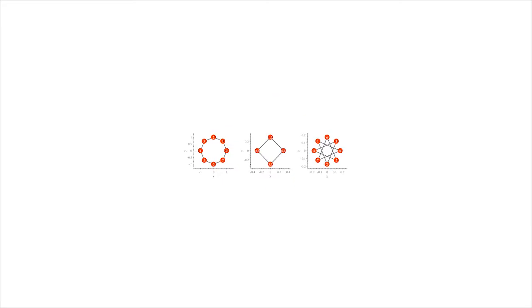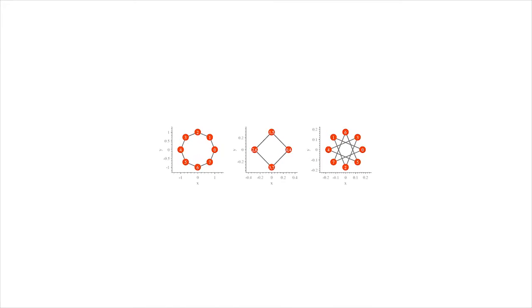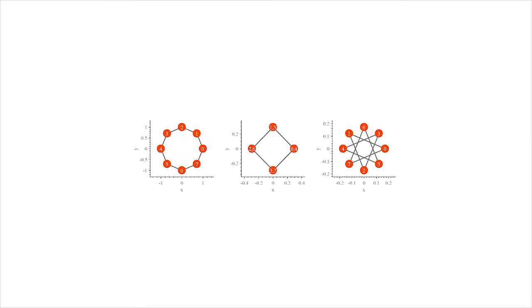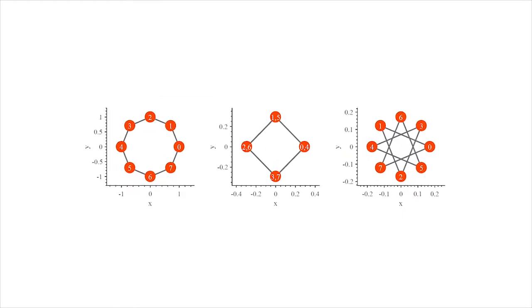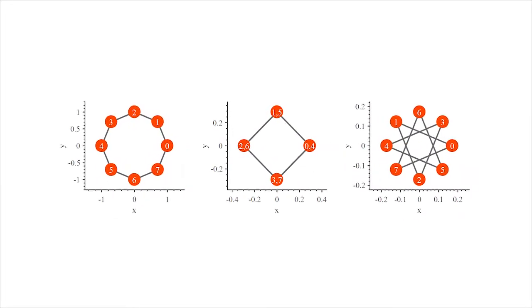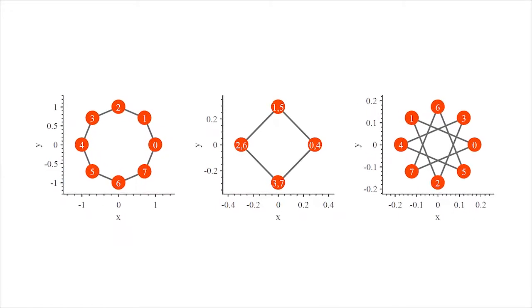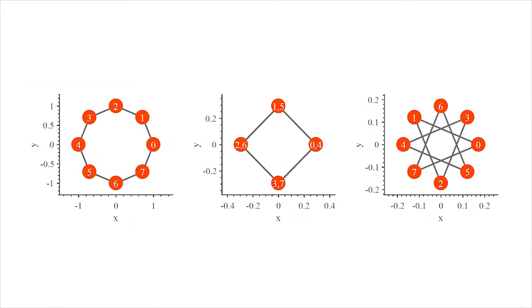We can show that other than the regular polygon, this strategy induces undesired equilibria. However, these equilibria are unstable and the regular polygon is the only locally stable equilibrium. For example, consider the case of eight agents—among the three possible equilibrium configurations, only the regular polygon on the left is stable.